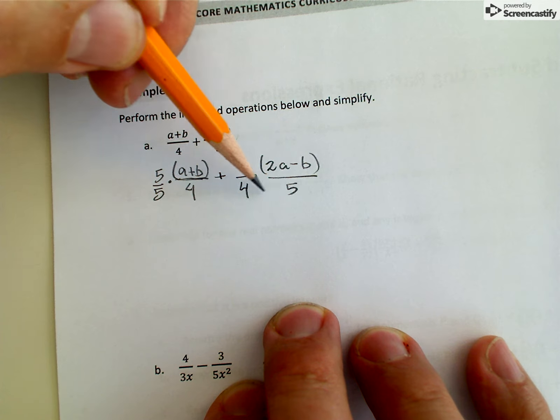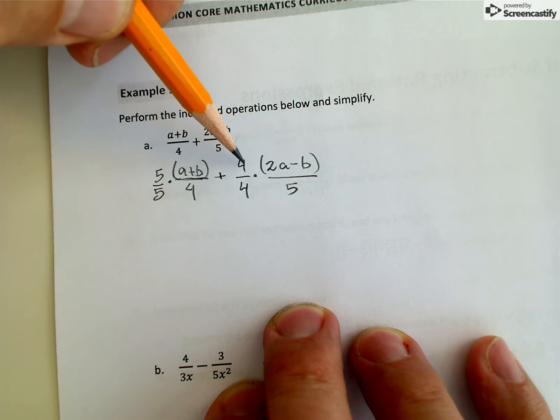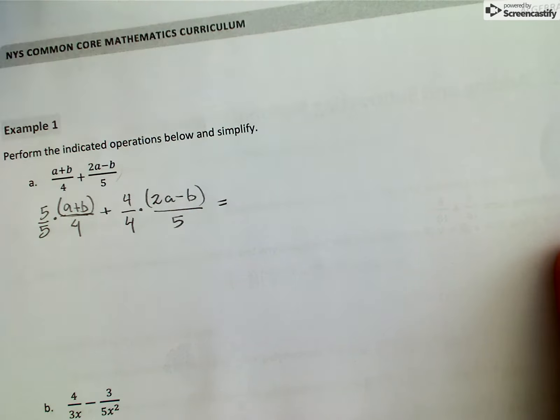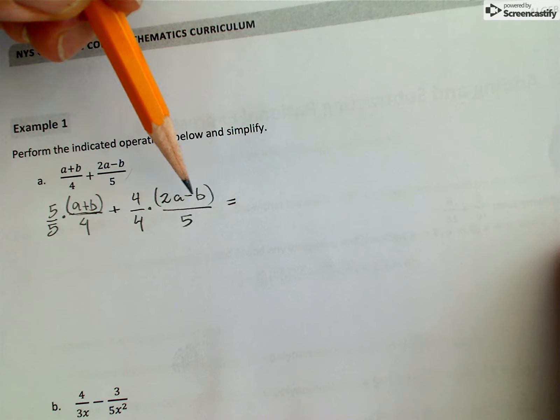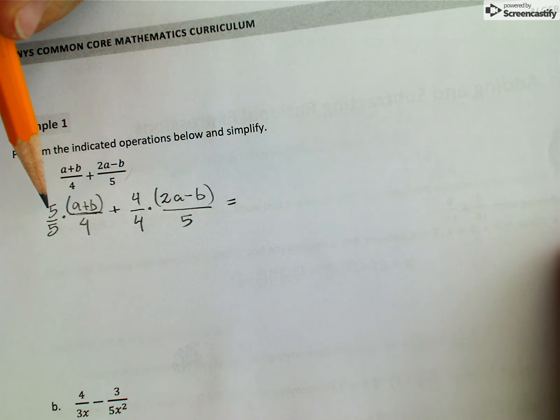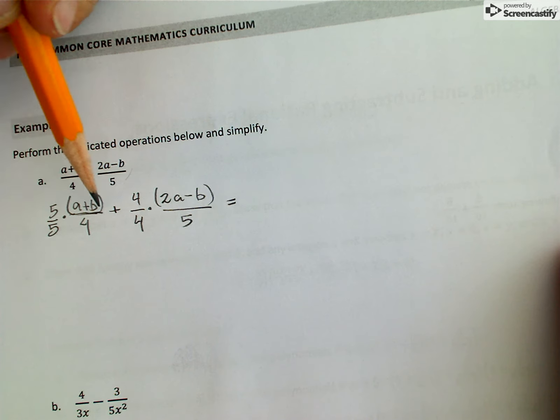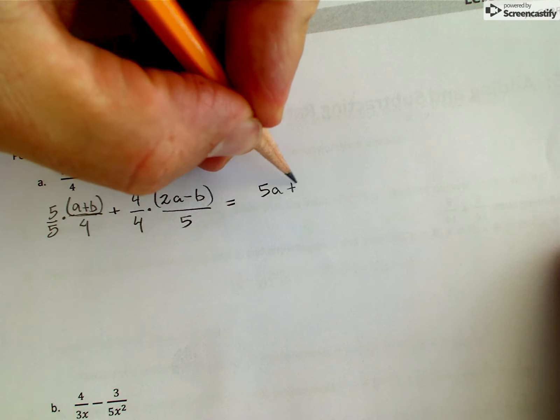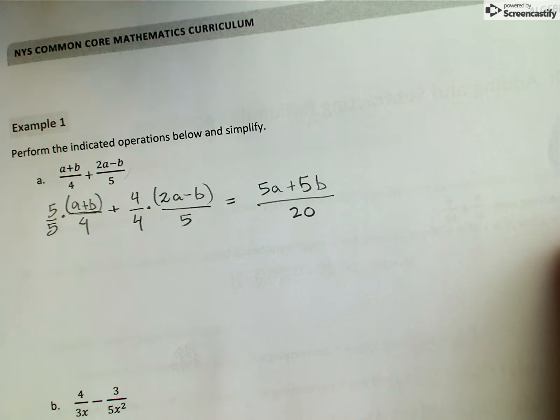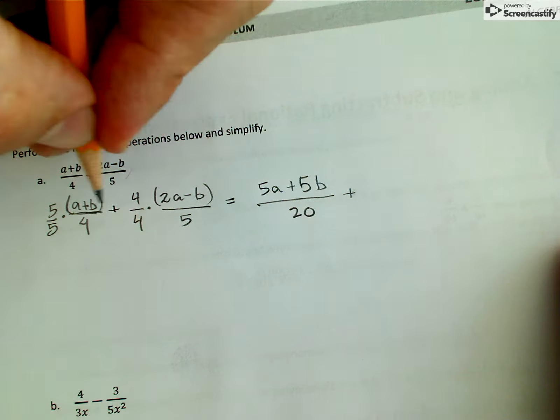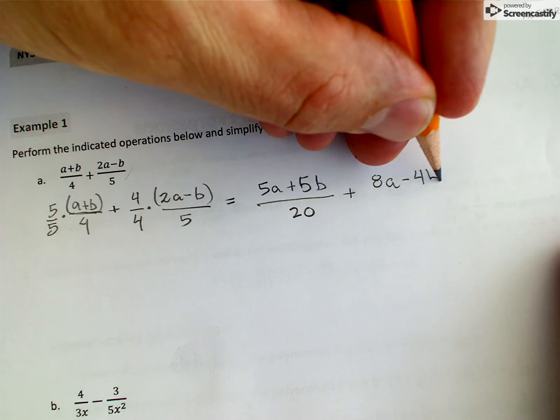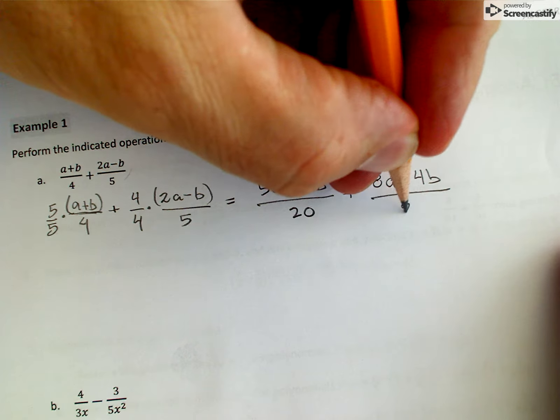When I do that product on the bottom I get 20 and I also have to multiply the top by 4 as well. So the next step is to actually follow through with this multiplication. I will multiply this 5 by everything in the parentheses there, 5a plus 5b, and on the bottom I get 20. To that I'm going to add this product, which gives me 8a minus 4b divided by 20.